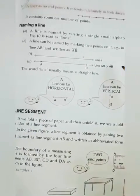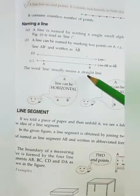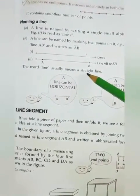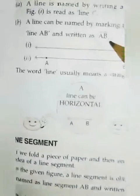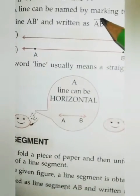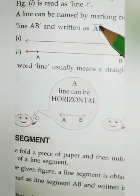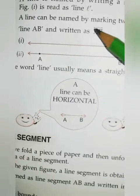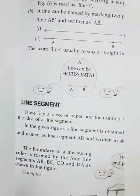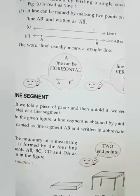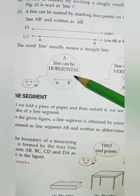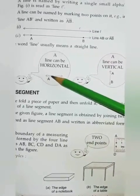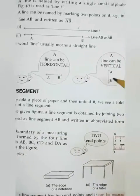A line can be named by marking two points on it. For example, in figure 2, line AB is shown. It is read as line AB and written like this. You write AB and put one line symbol, means one straight line you draw and both sides you mark arrow. The word line usually means a straight line. A line can be horizontal and a line can be vertical. This one is horizontal line and this one is vertical line.